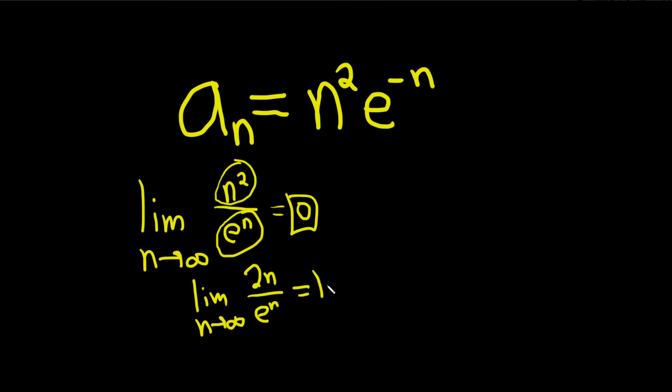We can use L'Hopital's again because it's still infinity over infinity. So the derivative of 2n is 2. The derivative of e to the n is e to the n. And now it's more clear, this is blowing up. This is a constant and so the answer is zero.